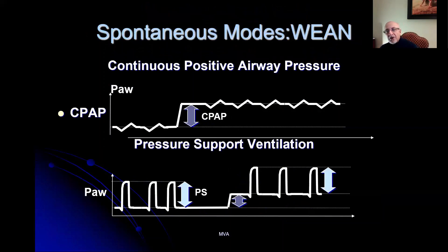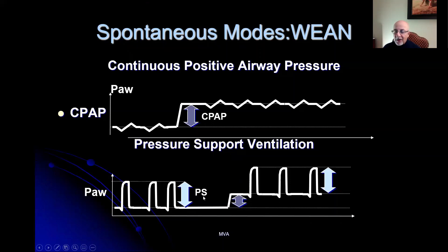Spontaneous modes are used for weaning. Generally, we put the patient on CPAP — the amount of PEEP dialed in, generally five to eight centimeters — during a weaning trial. We then augment the patient's tidal volume by dialing in a certain amount of pressure support. During weaning, pressure support is generally five to eight centimeters, augmenting the patient's tidal volume to allow comfortable breathing prior to a blood gas. You want to ensure that the tidal volume delivered by the pressure support is around 300 cc so the patient gets adequate alveolar ventilation to maintain their acid-base status.